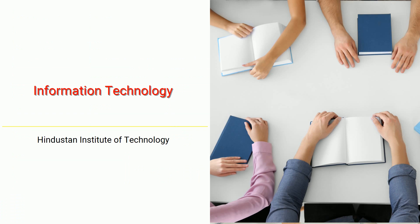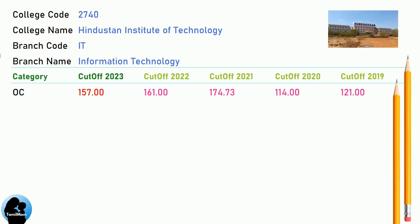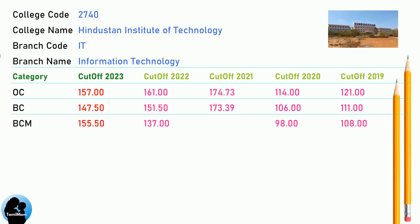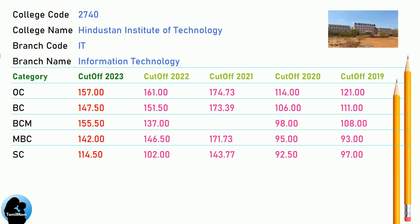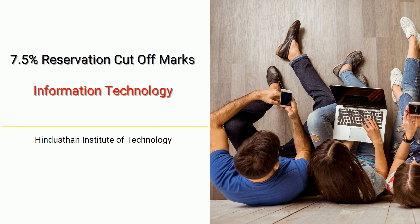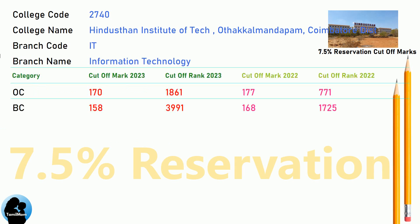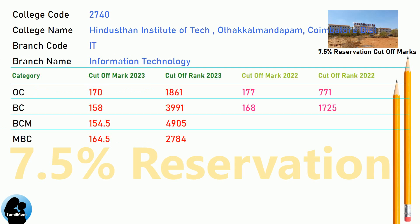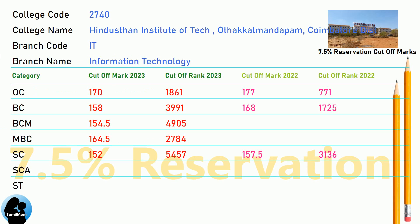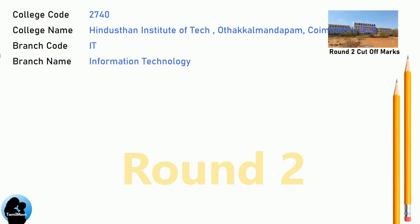DNA Cut-Off for Hindustan Institute of Technology in Information Technology. DNA 7.5 Reservation Cut-Off for Hindustan Institute of Technology in Information Technology. DNA Round 2 Cut-Off for Hindustan Institute of Technology in Information Technology.